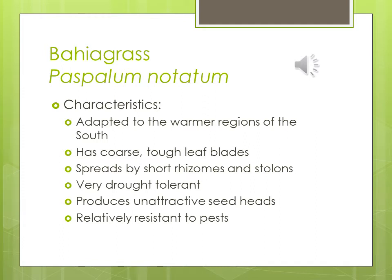Bahia grass — Paspalum notatum: adapted to warmer regions of the south, not likely here in Winston-Salem. It has coarse, tough leaf blades and spreads by short rhizomes and stolons. Very drought tolerant — good for coastal clients who don't want irrigation. However, it can produce very ugly seed heads, so if a client only mows every two weeks, this grass is not appropriate. It is relatively resistant to pests, making it useful if clients can deal with seed head issues and don't need irrigation.